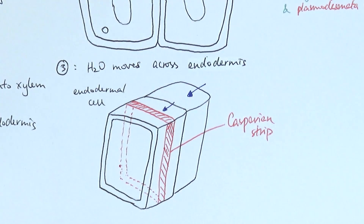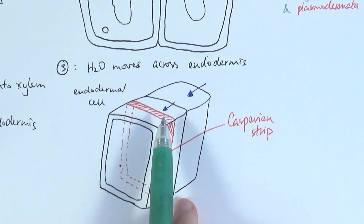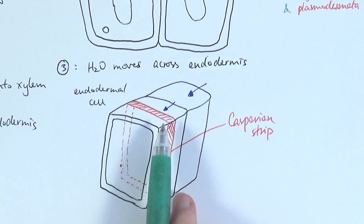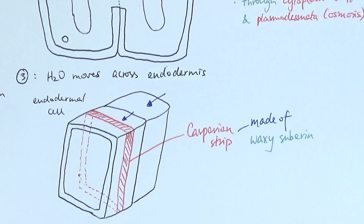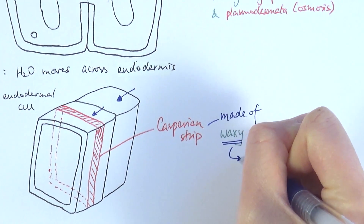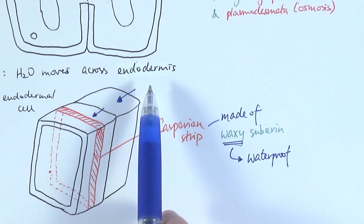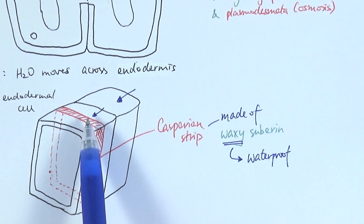Imagine a present in a box with ribbons on the outside — the Casparian strip is like that ribbon, except it's embedded within the wall of the box rather than on the outside. So the Casparian strip is embedded within the cell wall. When water traveling through the apoplast pathway reaches the endodermal cell, it comes face to face with the Casparian strip. The Casparian strip is made of a substance called suberin, which is quite waxy. Just as the waxy cuticle on a leaf surface is waterproof, suberin is waterproof — so the apoplast pathway is blocked.